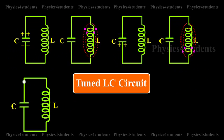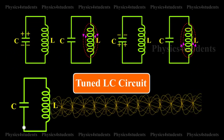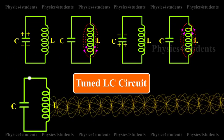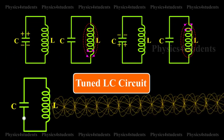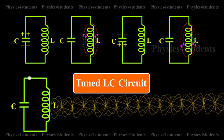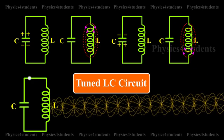This charging and discharging process results in oscillating current, and hence electrical oscillations are set up in the LC circuit. When an LC circuit is used to store energy, it is called a tank circuit.